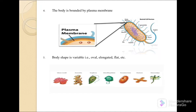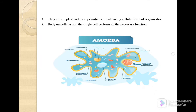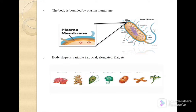The fourth characteristic is that the body is bounded by a plasma membrane. You can see the plasma membrane on your left side of the screen — it forms the boundary wall of the cell. The fifth characteristic is that the body shape is variable: oval, elongated, flat, etc. They do not have a fixed shape; it is always changing.